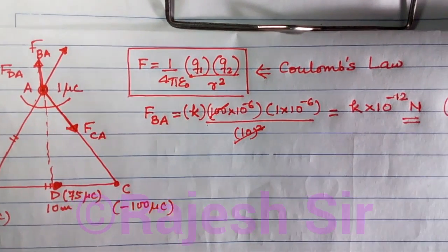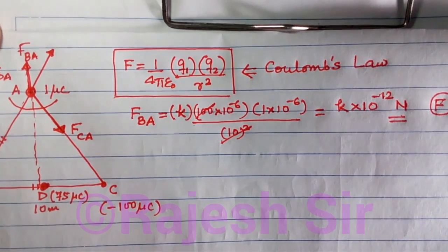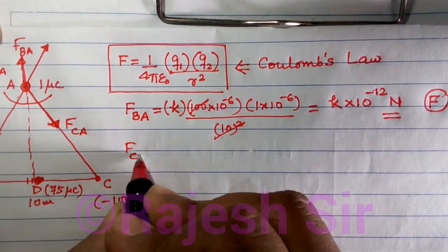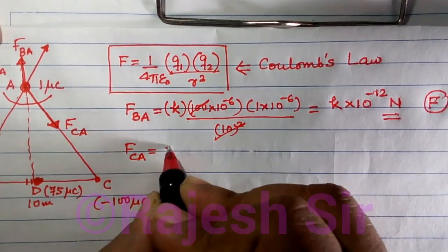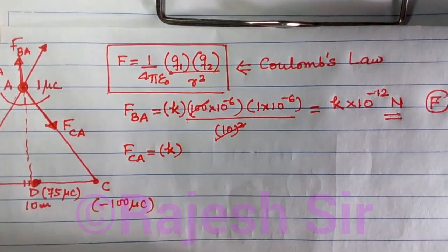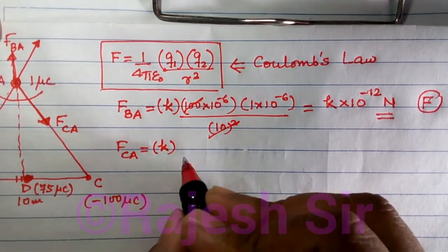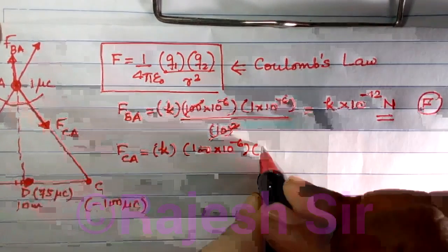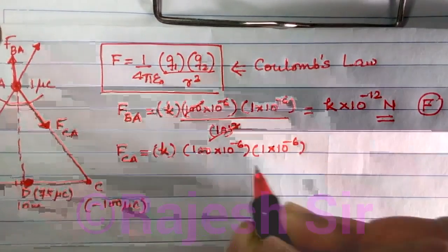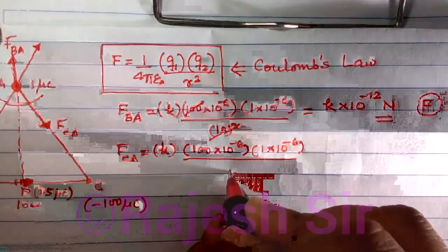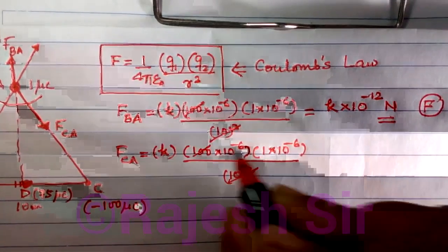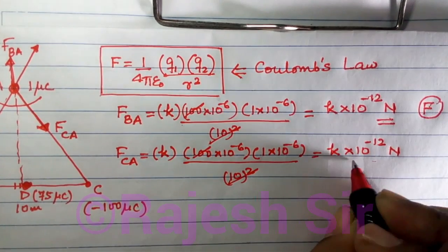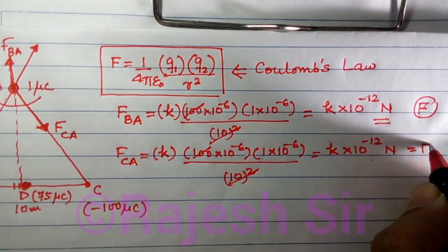Similarly, the force due to C on A, FCA, is K times 100×10⁻⁶ times 1×10⁻⁶ divided by 10 squared, which again comes out to be K times 10⁻¹² newtons. I have already considered this value as F.